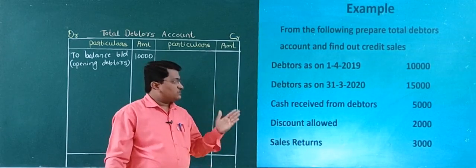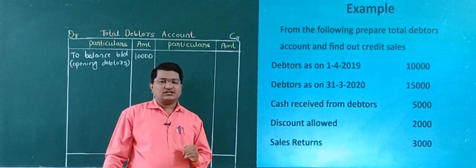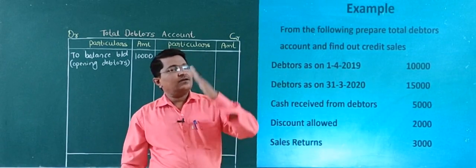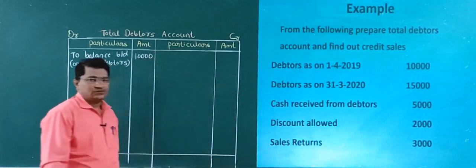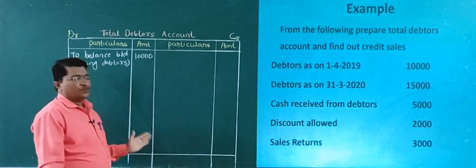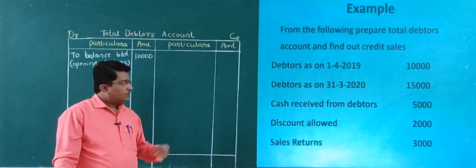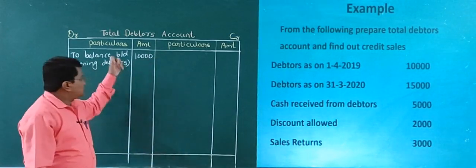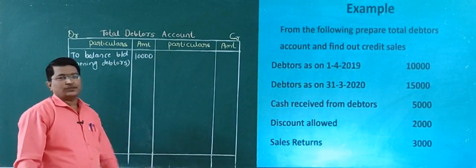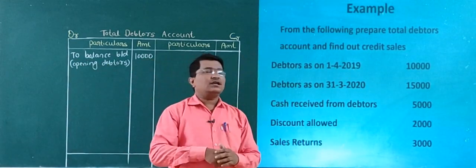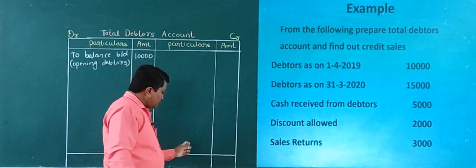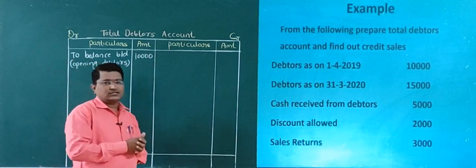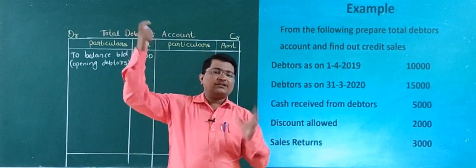Next, debtors as on 31st March 2020 — rupees 15,000 — it is closing debtors. Closing debtors is recorded at the credit side of the Total Debtors Account. Debit side has opening balance and credit side has closing balance. But closing debtors is recorded at the end of the account, because every account starts with opening balance and ends with closing balance.